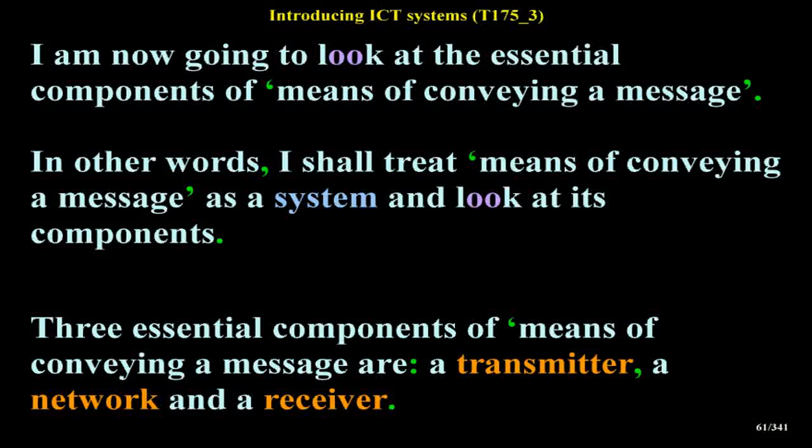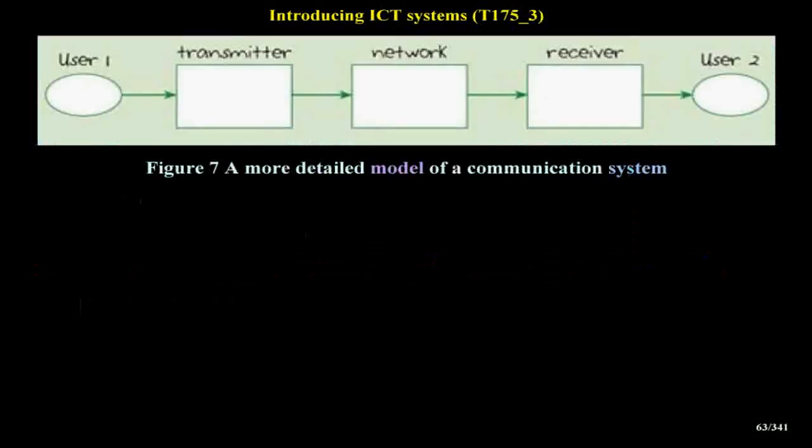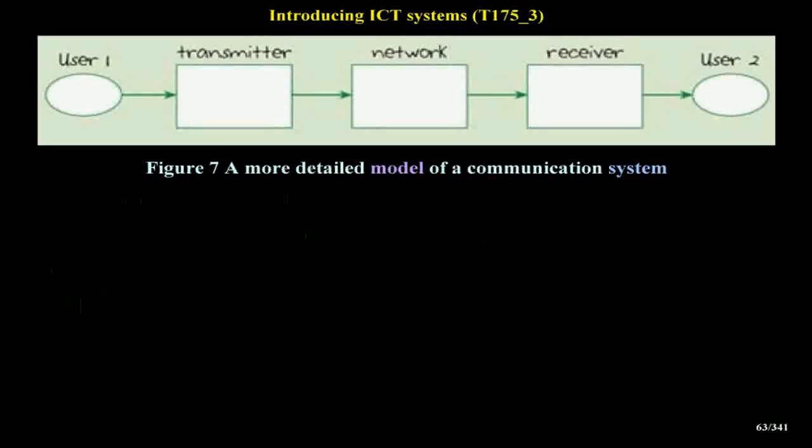The three essential components of means of conveying a message are a transmitter, a network and a receiver. Figure 7 shows these components in a block diagram. In a mobile phone system, for example, the transmitter would be user 1's mobile phone, the network would be the mobile telephone network, and the receiver would be user 2's mobile phone.